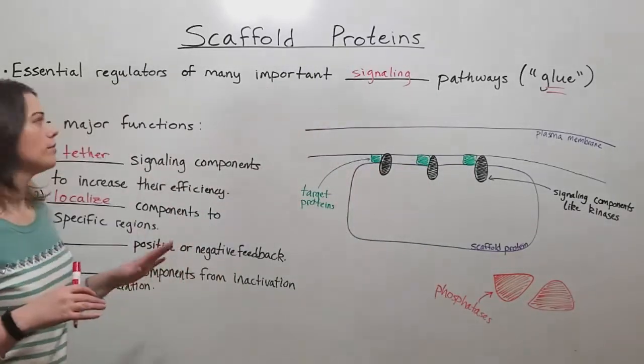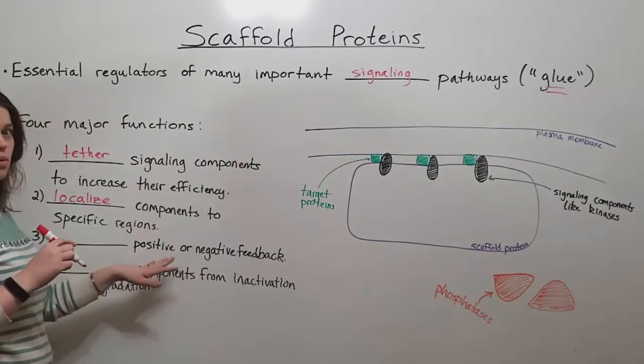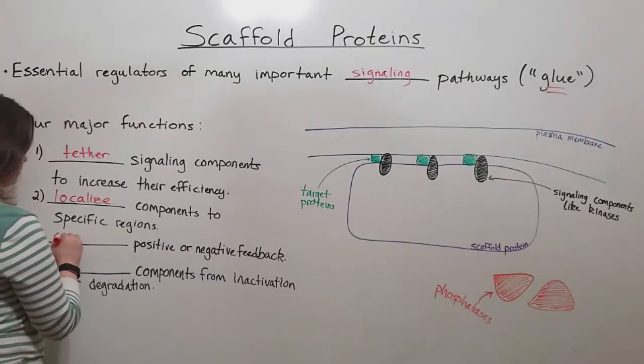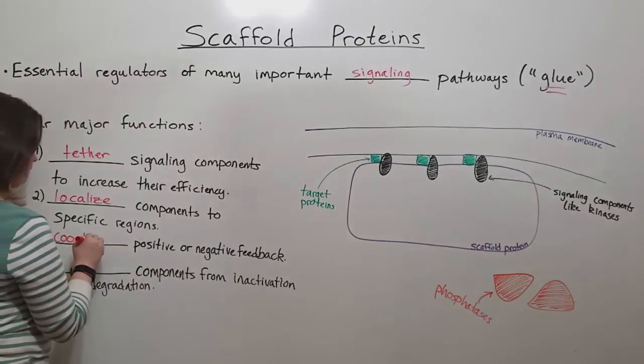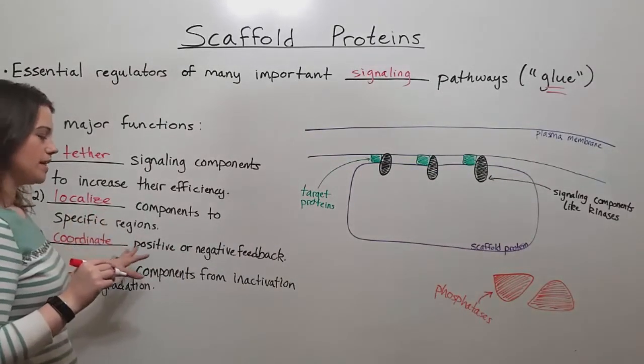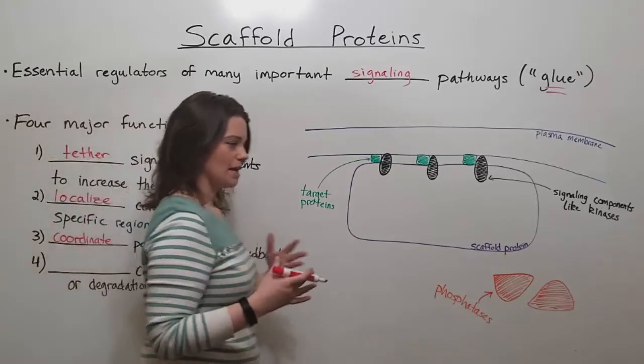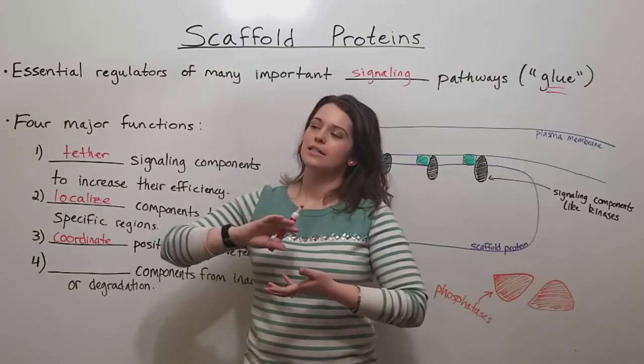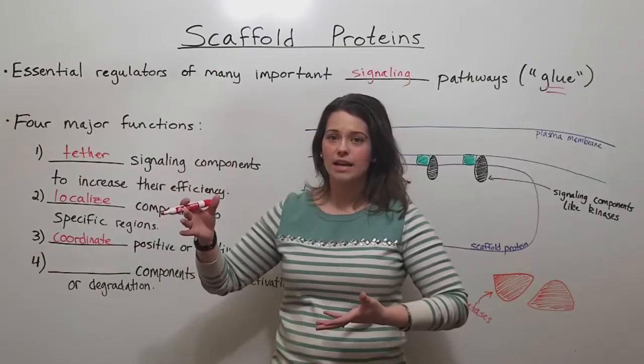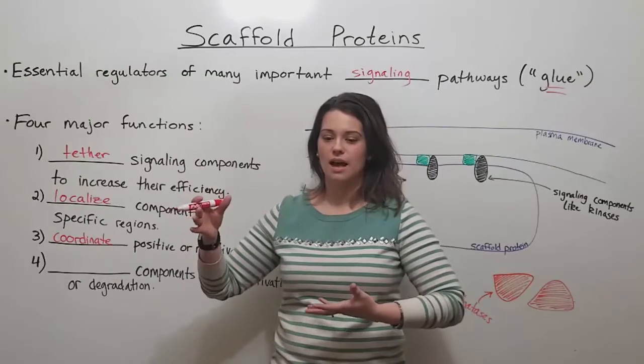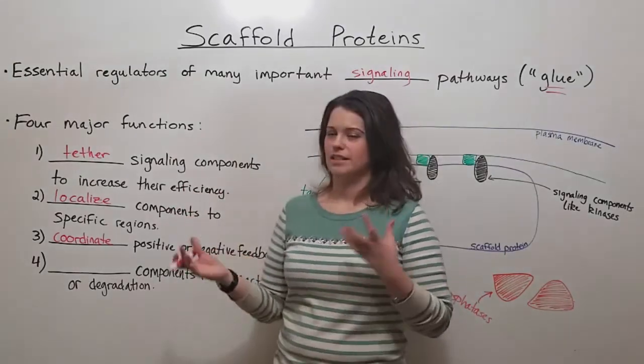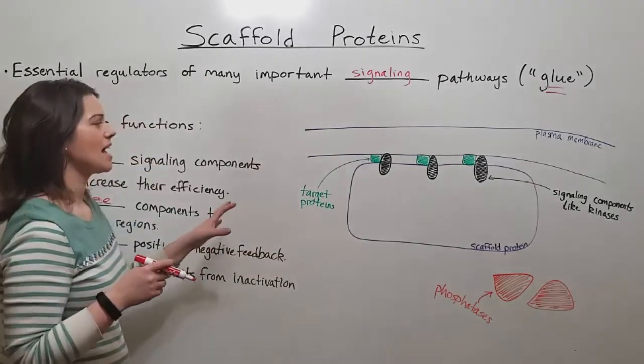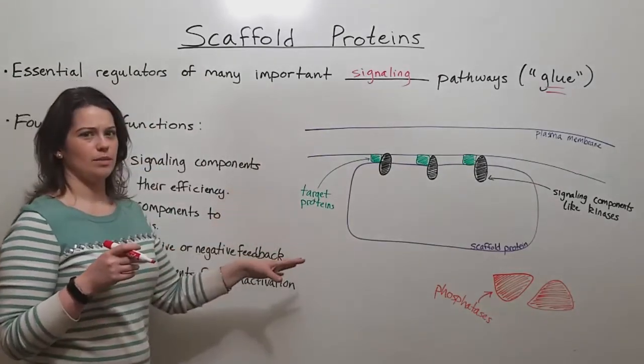Another important function of scaffold proteins is to coordinate positive or negative feedback. There are various types of feedback in the cell. Positive feedback amplifies an effect, while negative feedback slows the process down. Scaffold proteins can help to regulate these feedback mechanisms.